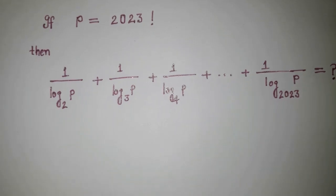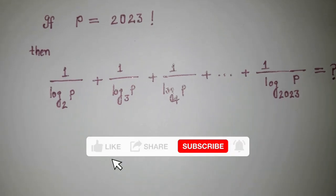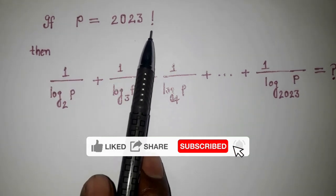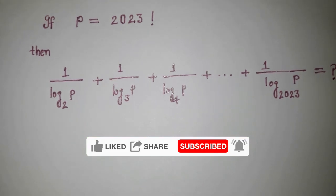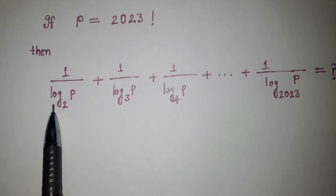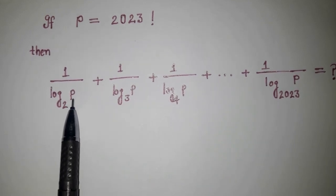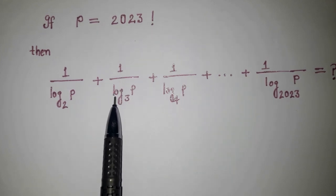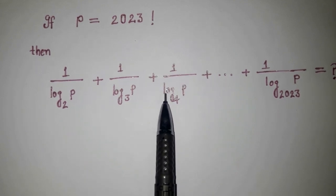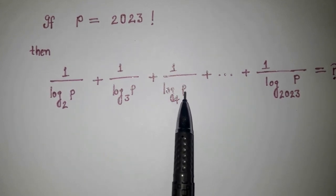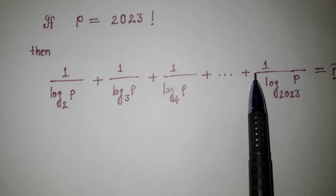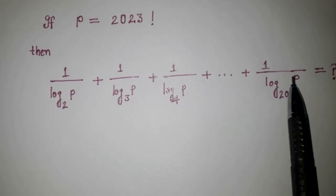Welcome back to triple x learning. Today we have this question on your screen: P equals 2023 factorial. Then what is the value of 1 upon log base 2 P plus 1 upon log base 3 P plus 1 upon log base 4 P and so on up to 1 upon log base 2023 P equals what?